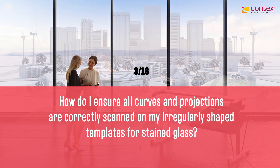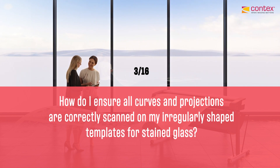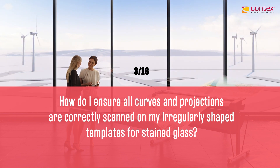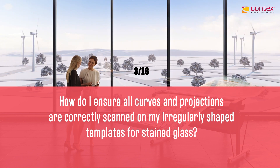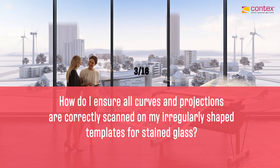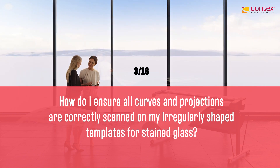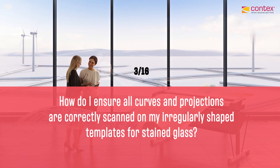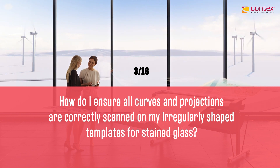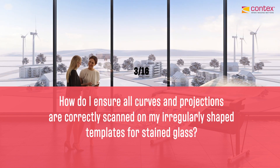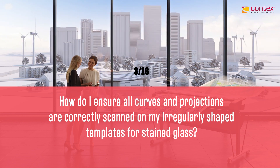I have irregularly shaped templates for stained glass. When I use auto size, it cuts off some items. How do I ensure all the curves and projections are correctly scanned? Auto sizing needs to evaluate the leading edge of the document based on one of two paper sensors — one in the center and one off to the right. When you insert a document, it detects the leading edge. With an irregular shaped document like these templates, where you place the entry point has an effect.